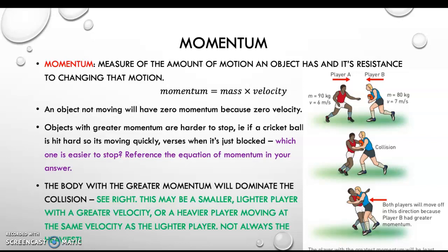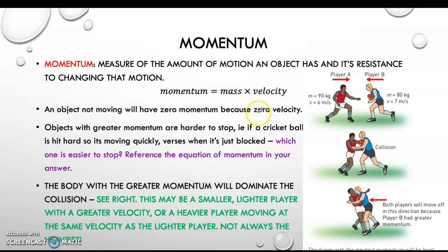Momentum is the measure of the amount of motion an object has and its resistance to changing that motion — essentially how hard it is to stop an object. The reason for that is because we take into account the mass of that object. Velocity is essentially speed in a certain direction. If you're not moving, you have zero momentum, because velocity would be equal to zero, so zero times anything will equal zero.